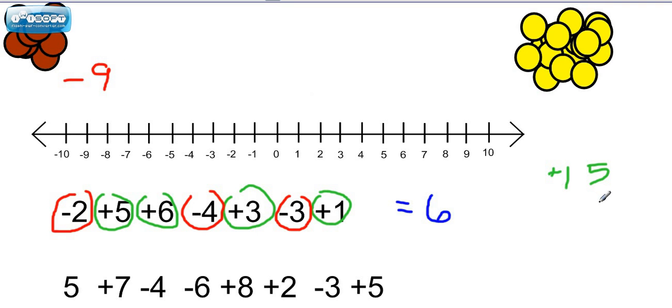Now if we combine a negative 9 and a positive 15, or if we're at a negative 9 and we go forward 15. 1, 2, 3, 4, 5, 6, 7, 8, 9, 10, 11, 12, 13, 14, 15, don't we still land at the 6?